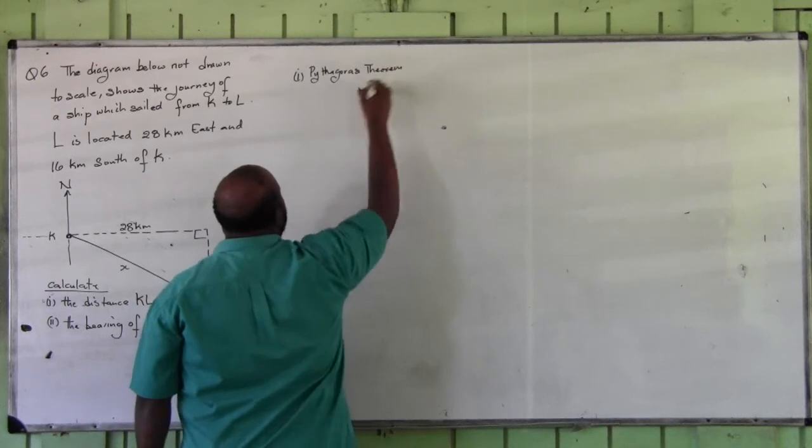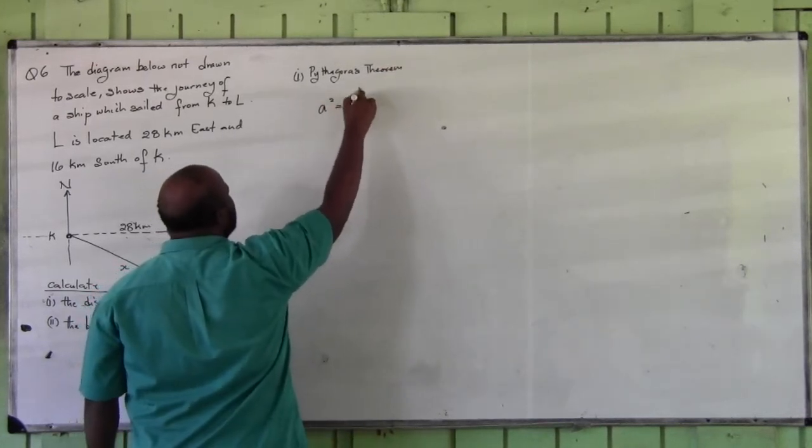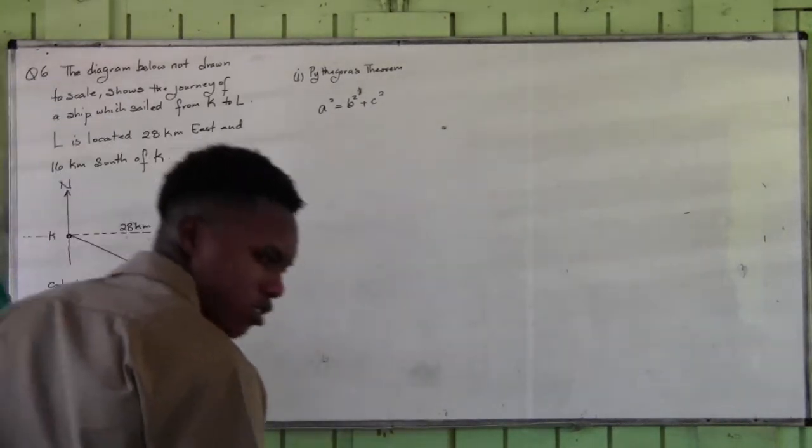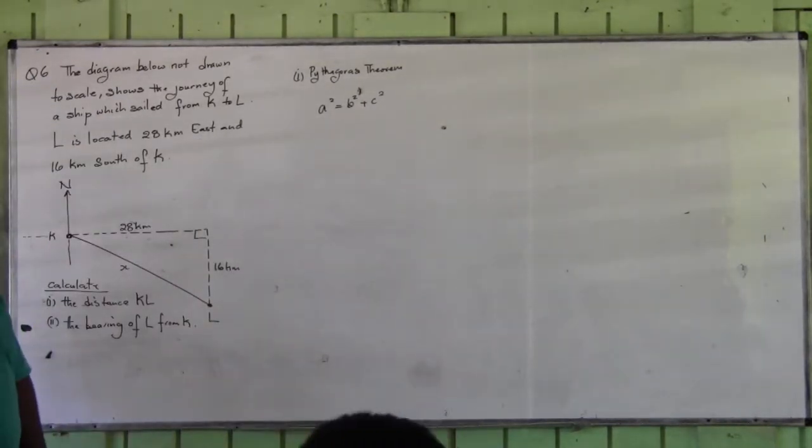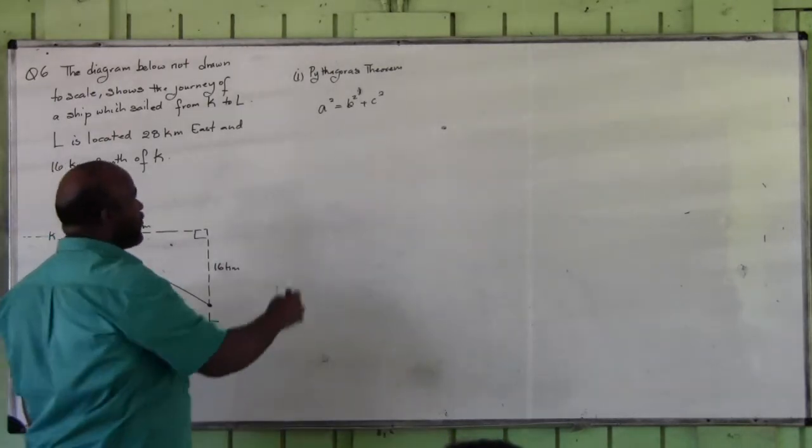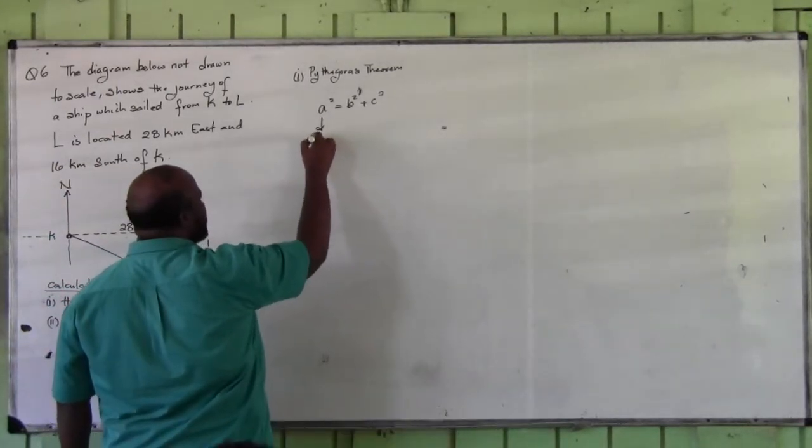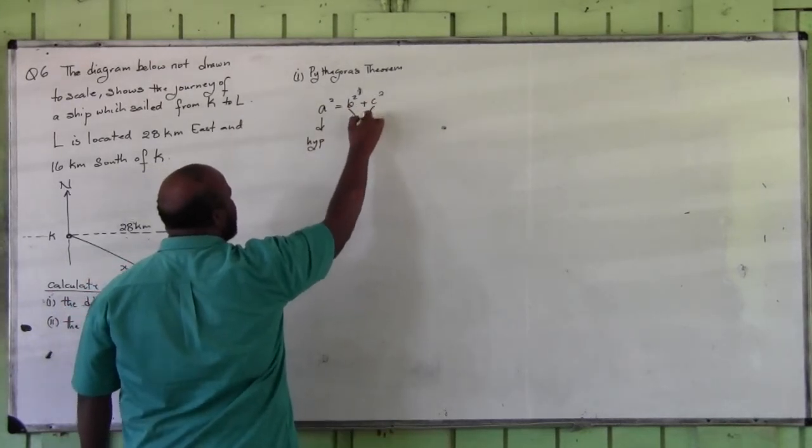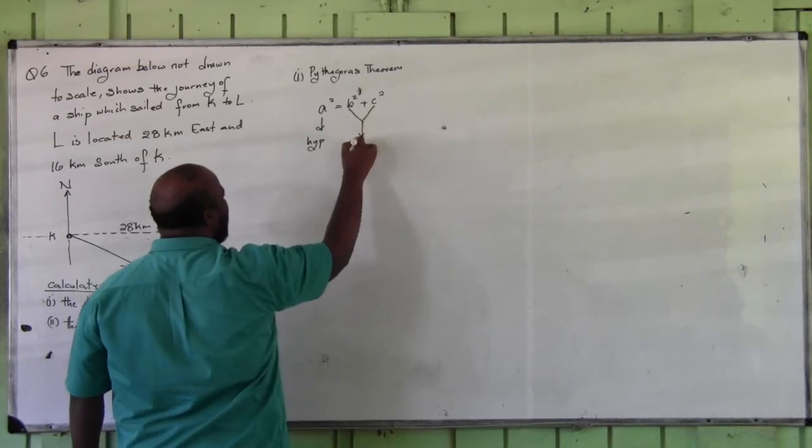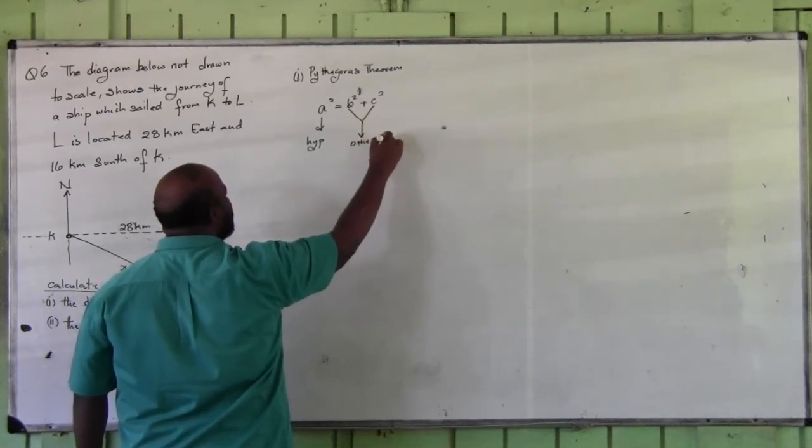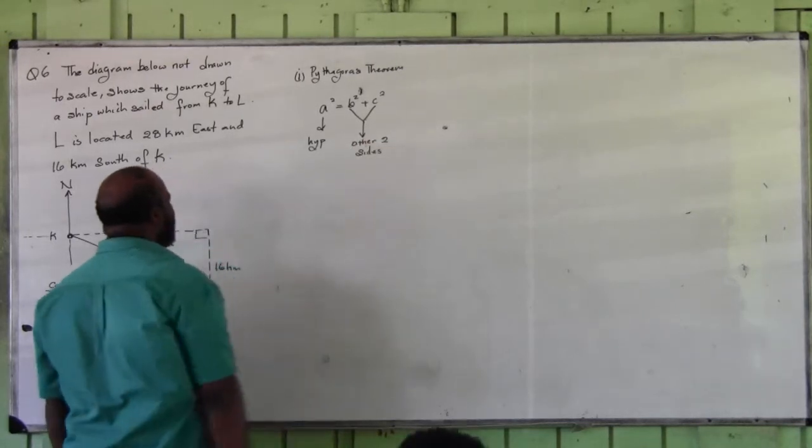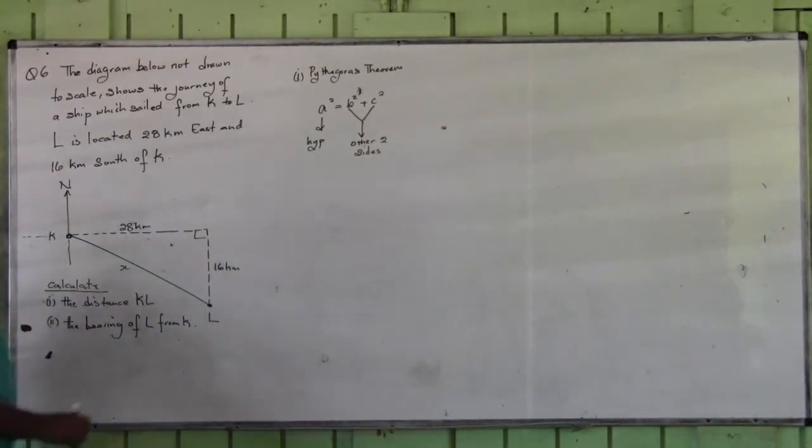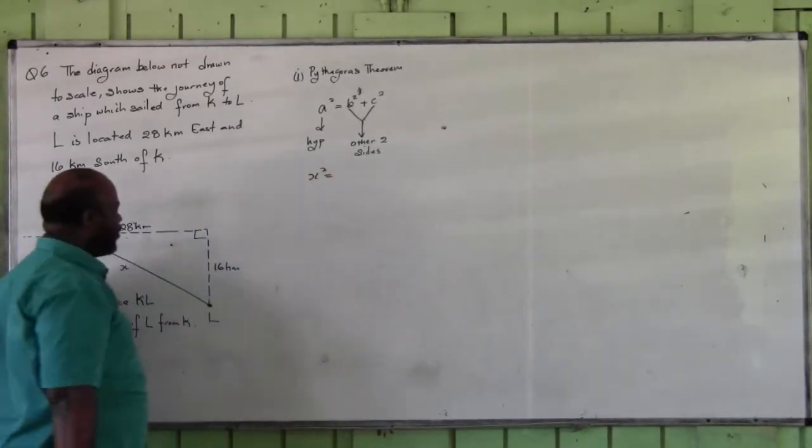Now Pythagoras theorem says A squared is equal to B squared plus C squared. Now other letters can be used, that's not important. What is important is what the letters represent. A is the hypotenuse, B and C are the other two sides.